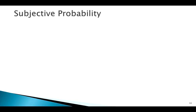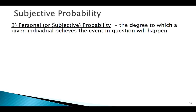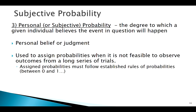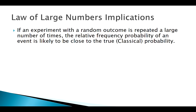The last approach some books mention is subjective probability. If I can't picture the sample space and can't run the experiment, I might apply a probability based on my own understanding of the situation. But we don't want to go around guessing too much — it's not an extremely precise way of doing things. The more we repeat a process, the more our relative frequency should move toward those theoretical or classical probabilities.